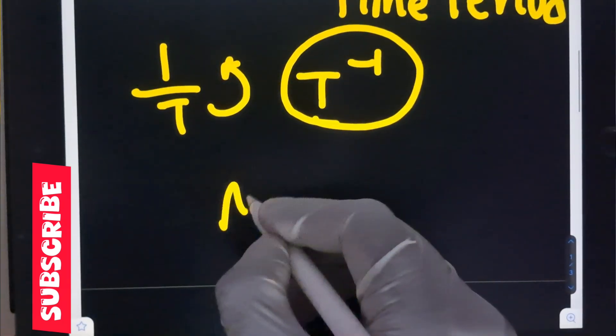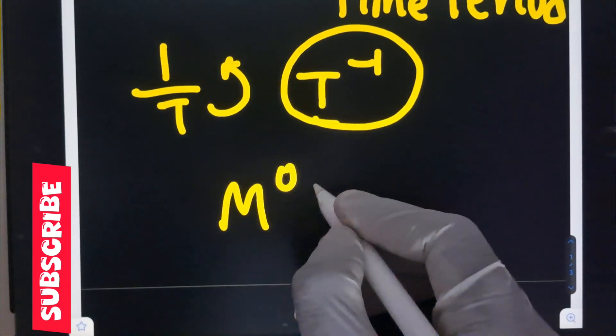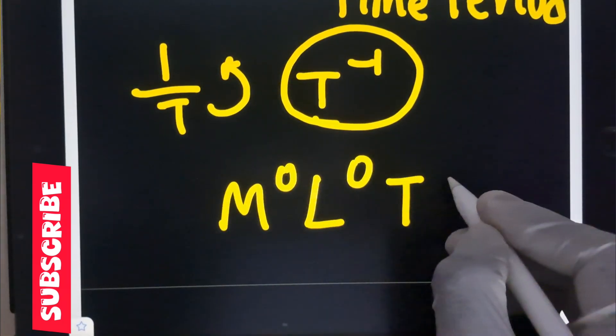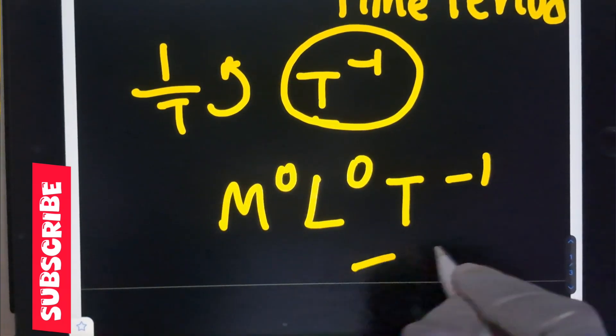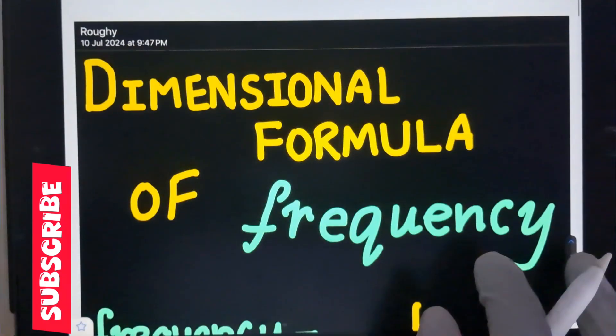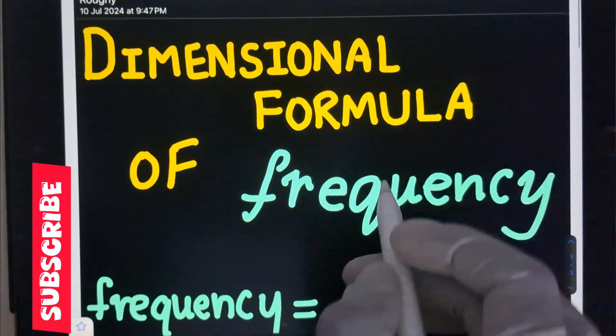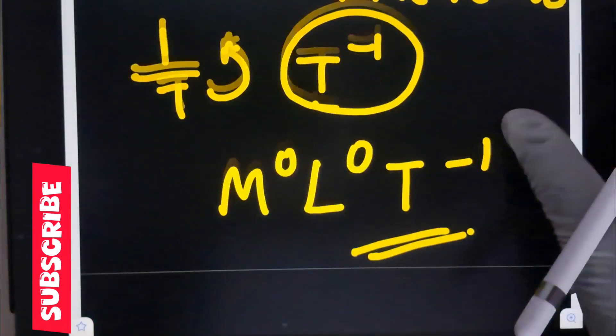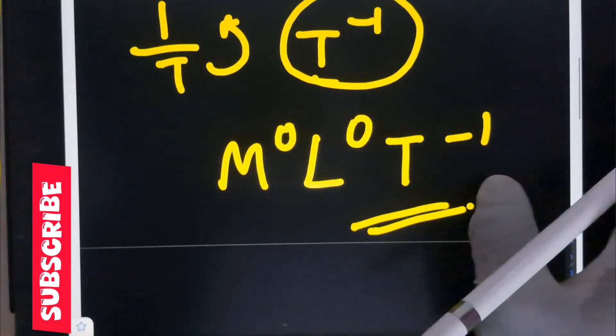The dimensional formula of frequency is M power 0, L power 0, T power minus 1. Frequency dimensional formula is T power minus 1.